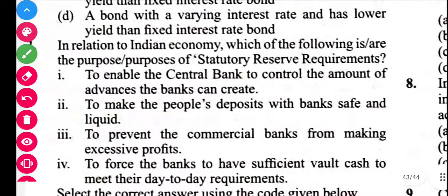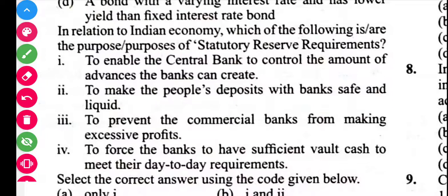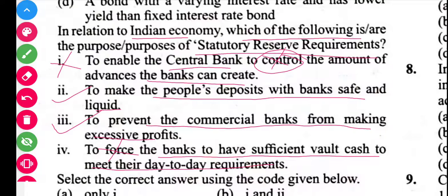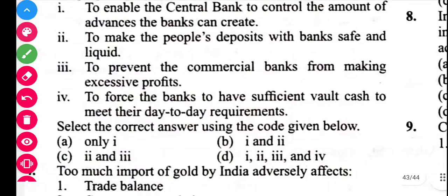Next question is related to the Indian economy. Which of the following are the purposes of a statutory reserve requirement? Statement 1 — to enable the central bank to control the amount of advances — is incorrect. Statement 2 — to make deposits safe and liquid — is correct. Statement 3 — to prevent commercial banks from making excessive profit — is correct. Statement 4 — to force banks to have sufficient cash — is incorrect. So statements 2 and 3 are correct, and the answer is C.